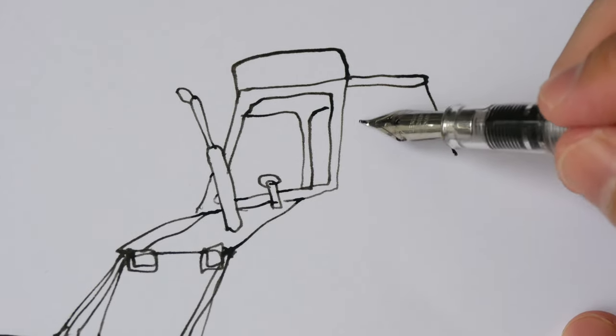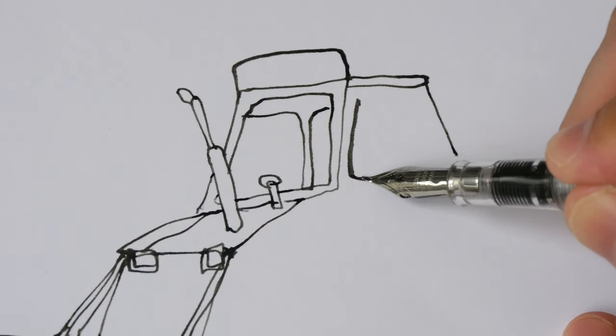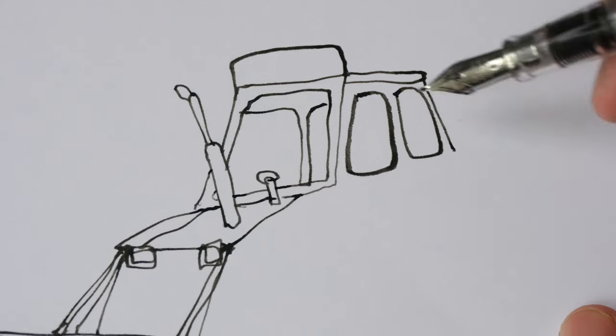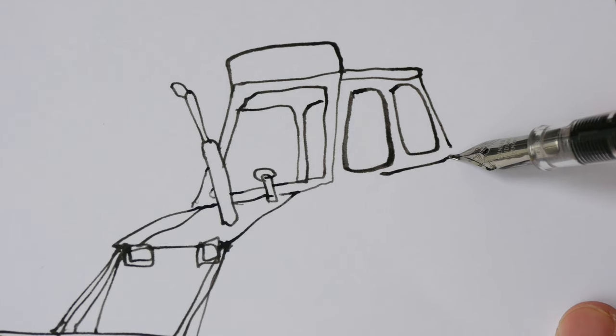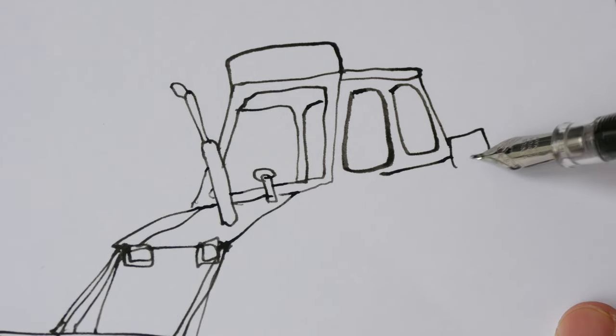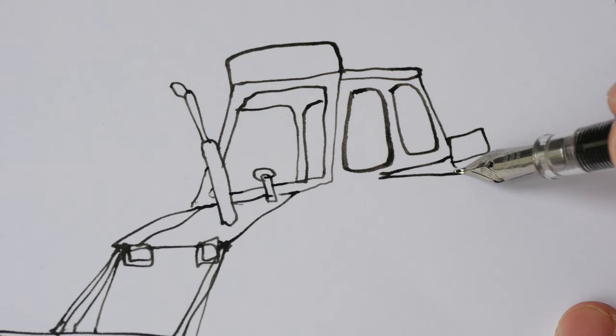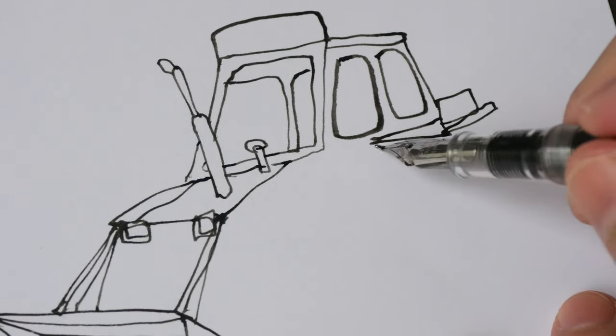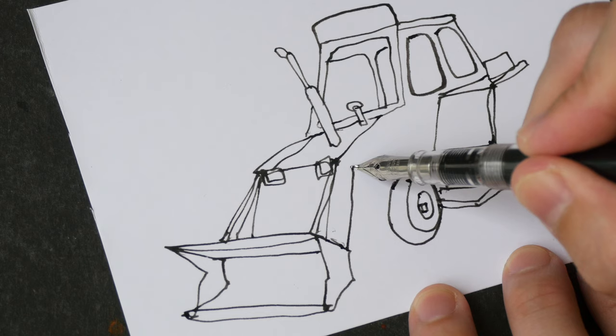If you do want to draw thicker lines, you can make a conscious effort to do so. Just tilt the pen slightly and have the broad area of the pen nib be in contact with the paper, and you can get a much thicker line, a noticeably thicker line. So that's why this pen is so versatile to use for drawing.